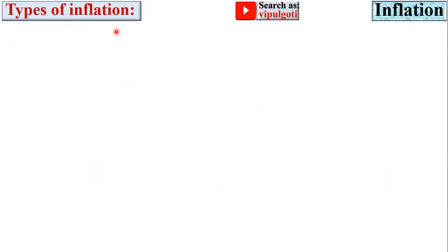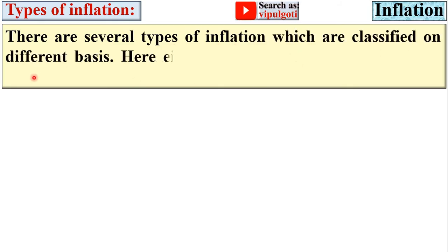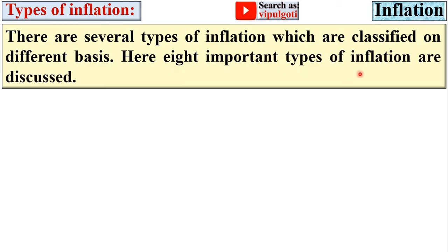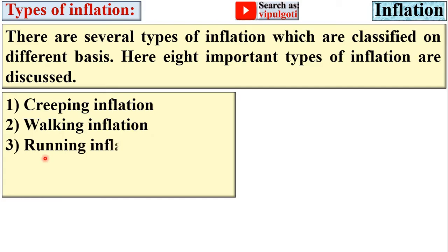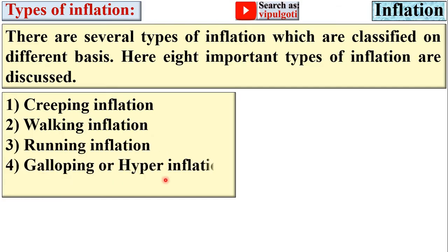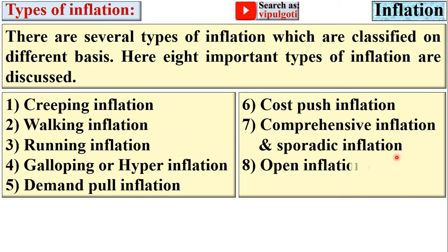There are several types of inflation classified on different bases. Here eight important types are discussed: creeping inflation, walking inflation, running inflation, galloping or hyperinflation, demand-pull inflation, cost-push inflation, comprehensive inflation, sporadic inflation, open inflation, and suppressed inflation.